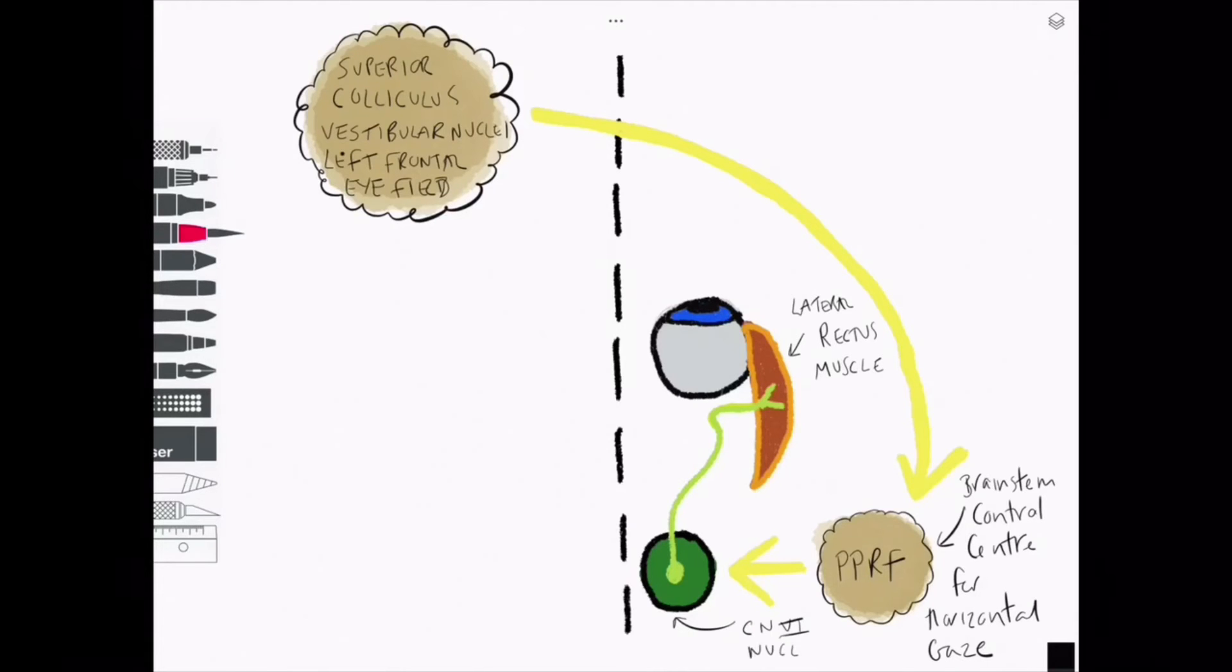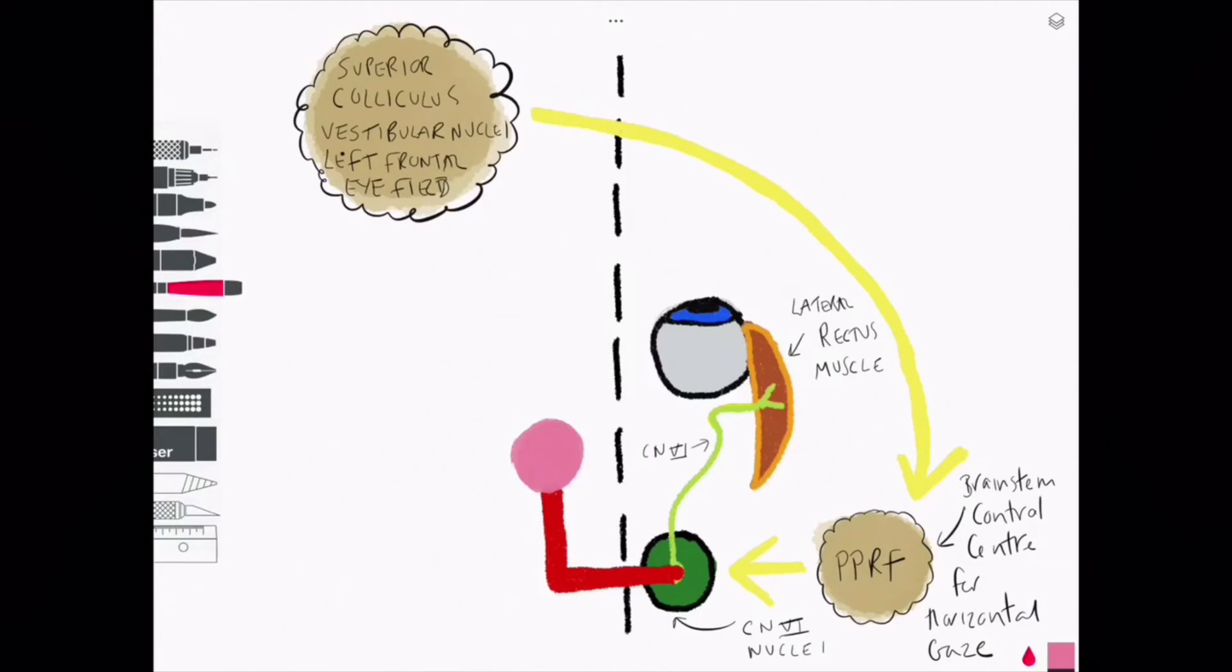This is where our medial longitudinal fasciculus comes in. We need to somehow make sure that when one eye is abducted, the other eye follows it by moving medially. This is called adduction, spelt a-d-d-u-c-t-i-o-n.